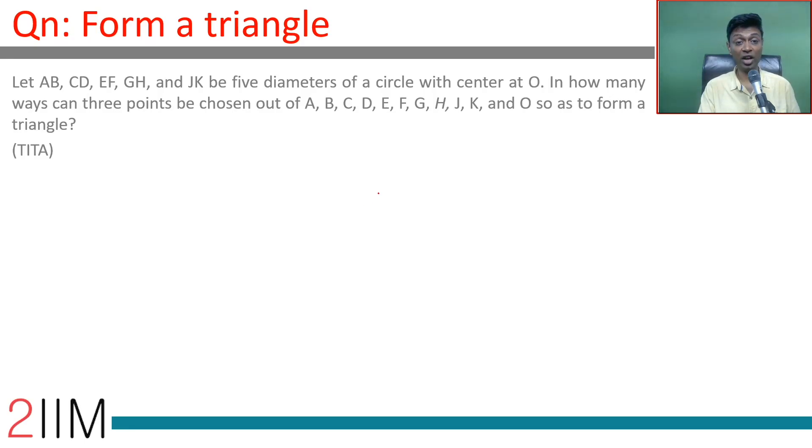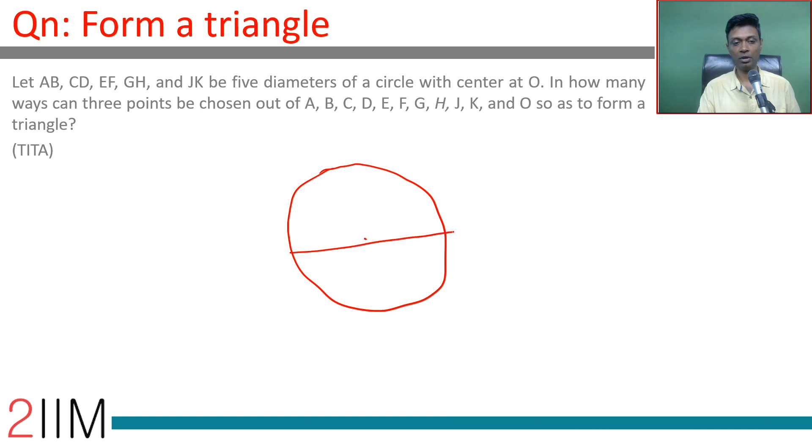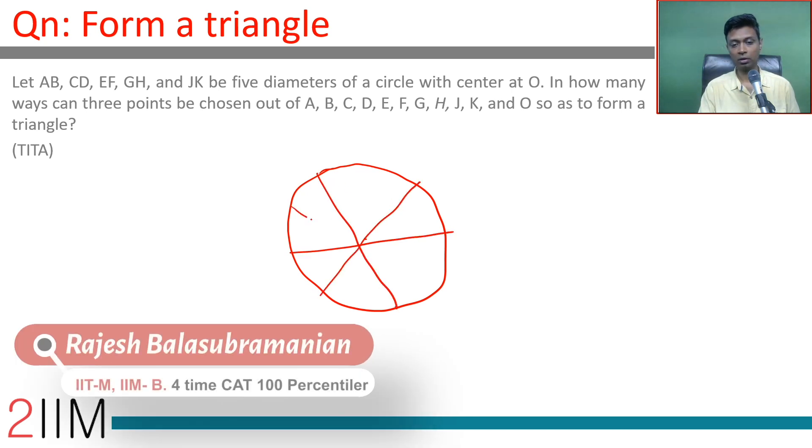Let AB, CD, EF, GH, and JK be five diameters of a circle with center O.